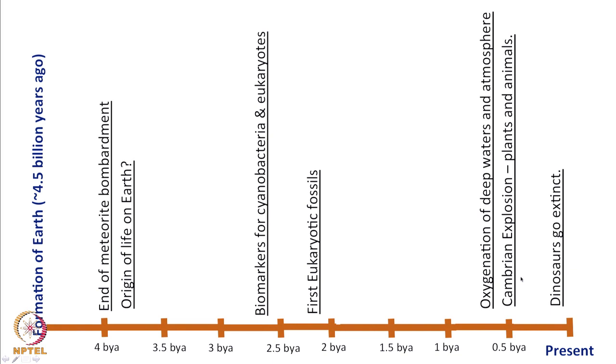That oxygenation event enabled the Cambrian explosion, where plants and animals really came into being, and this process is said to have started a little over half a billion years ago. About 65 million years ago, dinosaurs are thought to have gone extinct, and it is only in the last instant of life associated with Earth — in the scale we are looking at in the figure — that human beings enter the picture and life as we know it came to be recognized and classified.